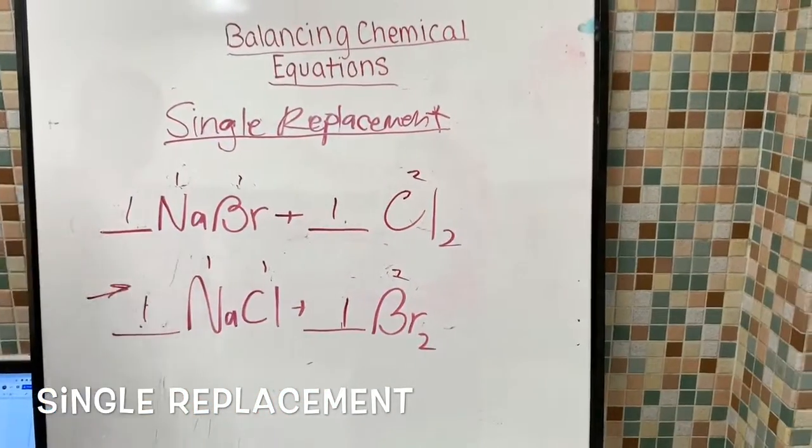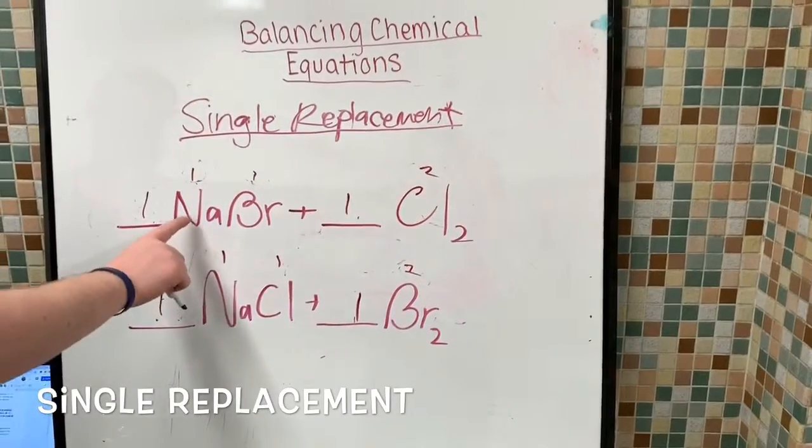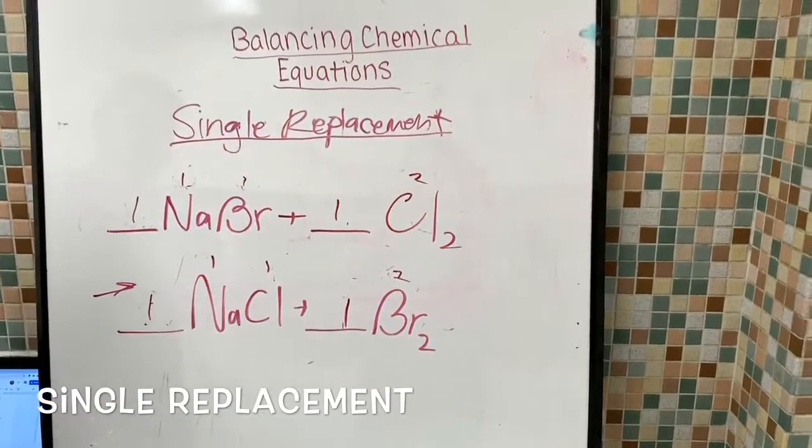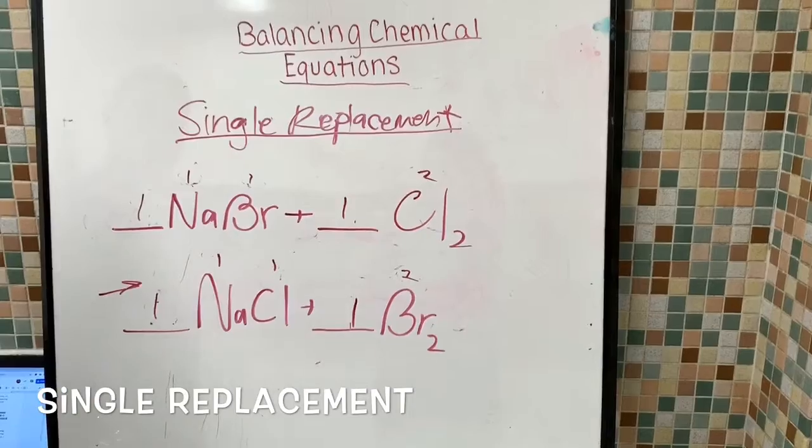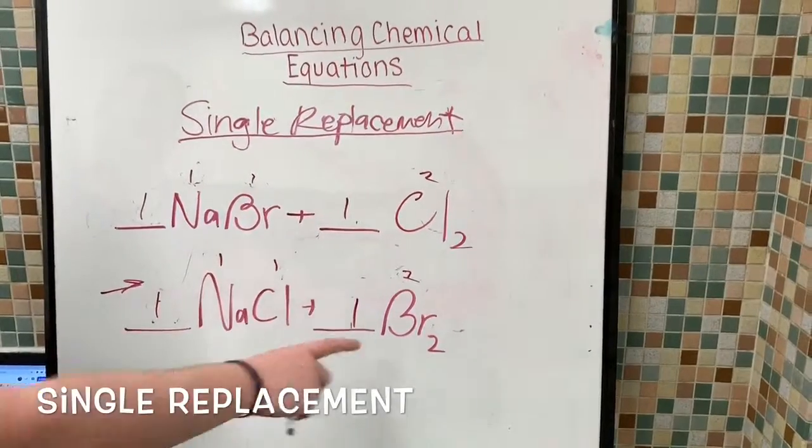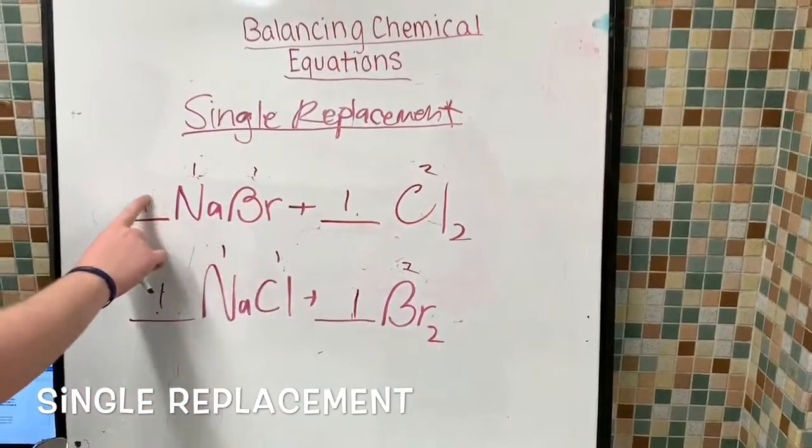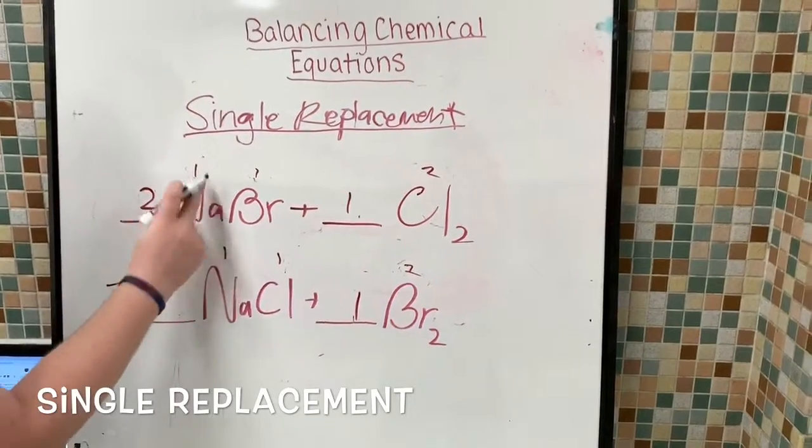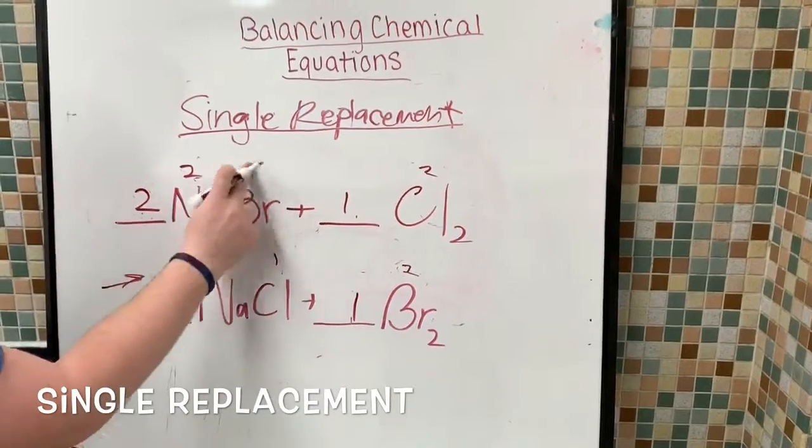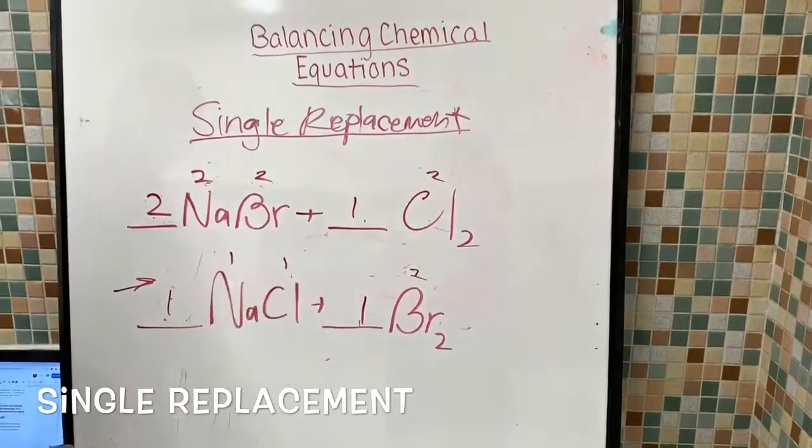So first let's start off with the Nas. There's one Na here, one Na here, so the Nas for now are all balanced. Then you look at the product again, you see there's two Brs here and only one here. So now this is going to have to change to a two. And so do the Na and the Br, they also change to a two because now you have two.